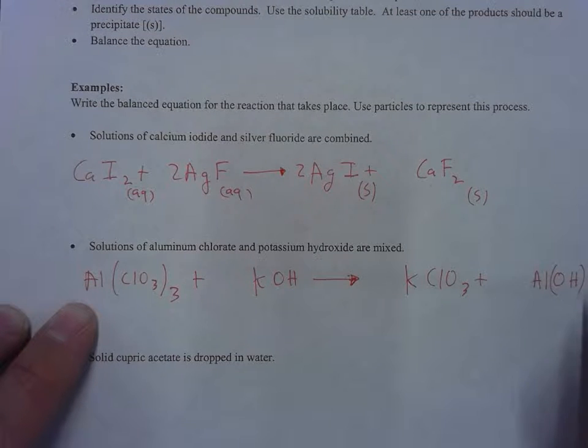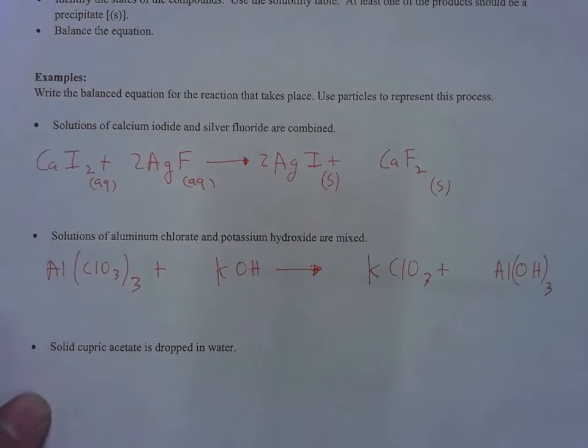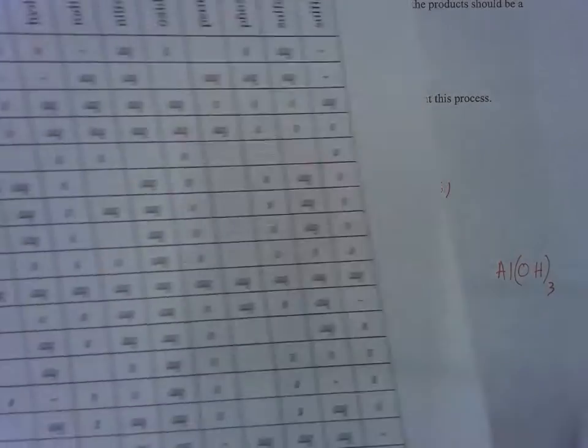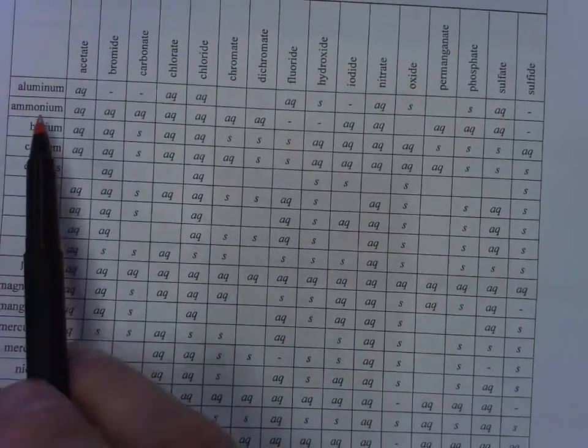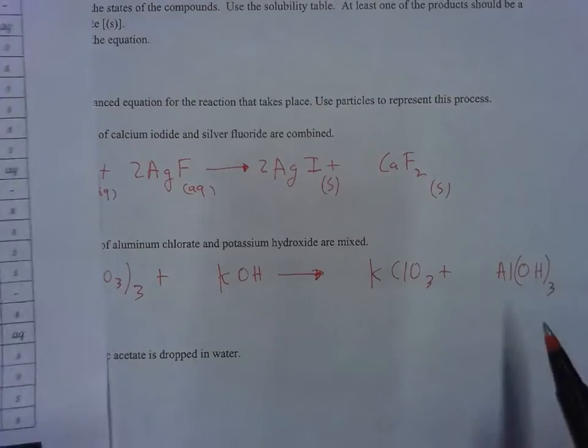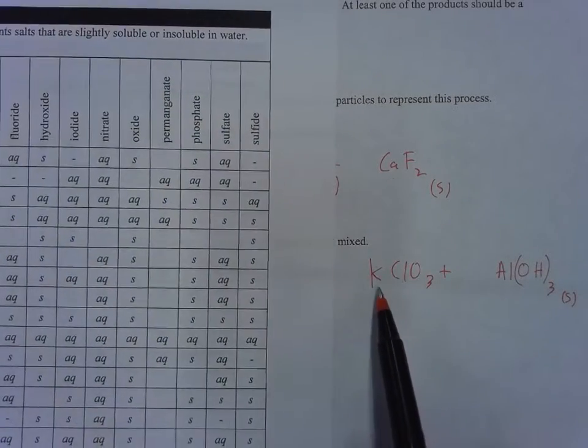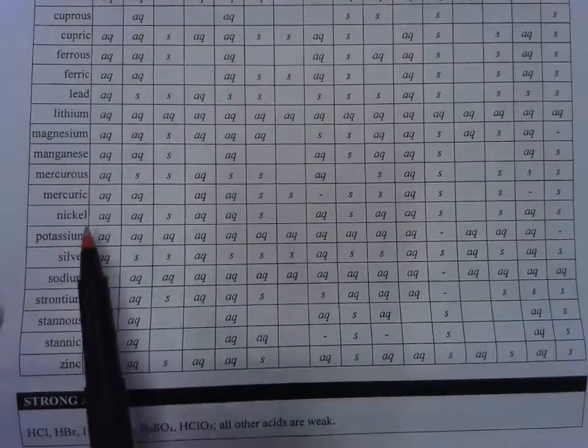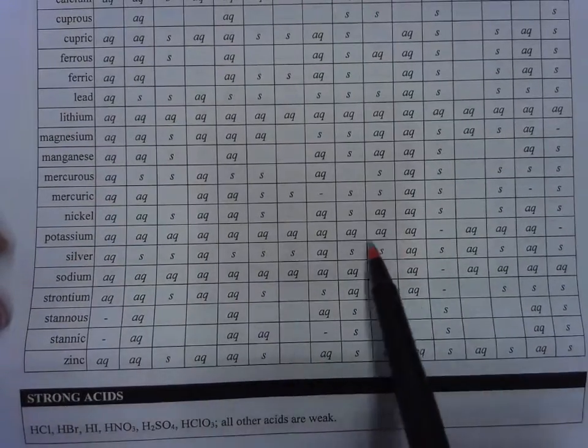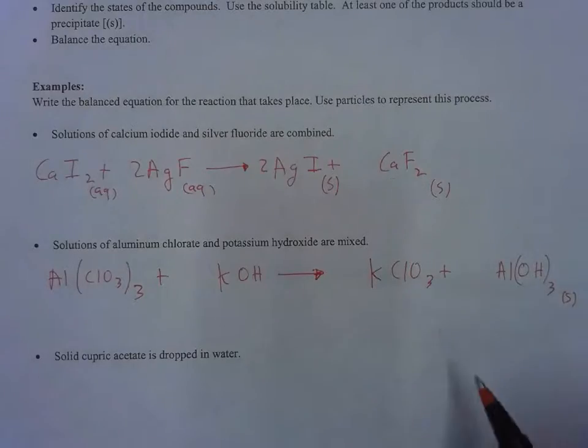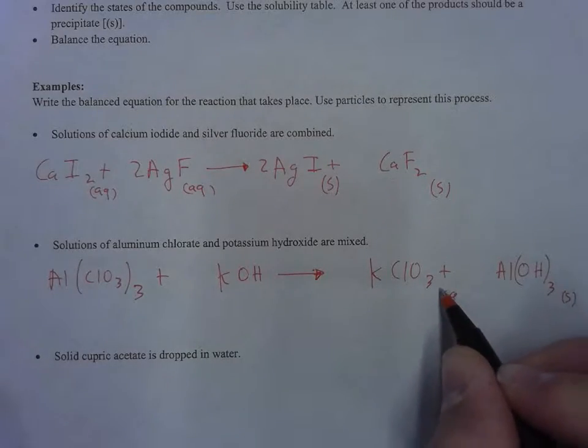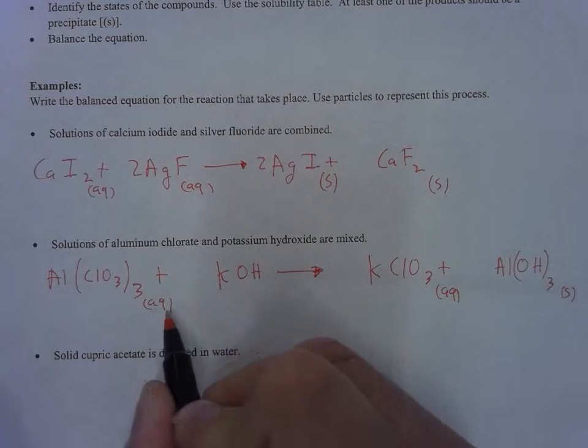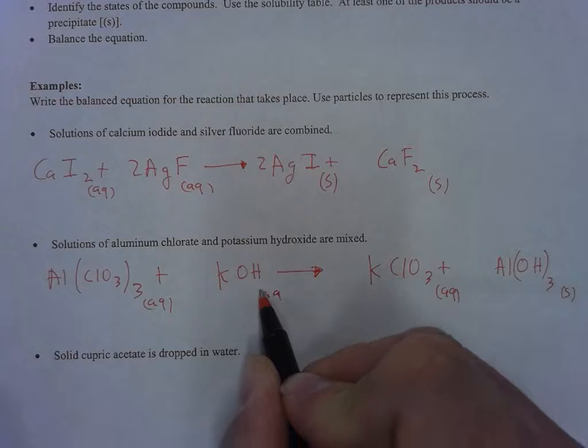Now I go back to my solubility table. Aluminum hydroxide is a solid. Potassium chlorate—everything that forms with potassium is aqueous, so I put aq there. I've got solutions of both to begin with, so I put aqs there.